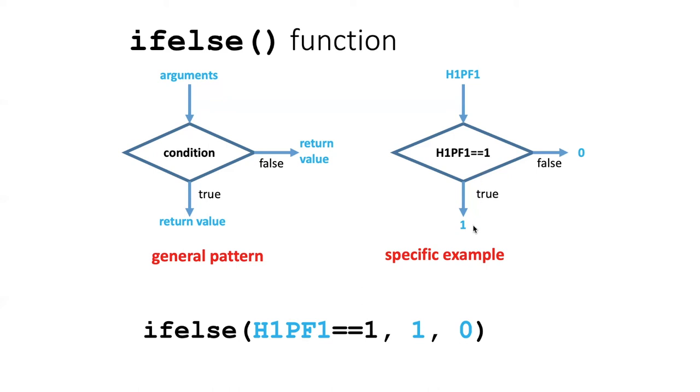So in this case, if the value is one, we don't really do anything to it, we leave it the same. But in all other conditions, that's where the else part comes in: we assign its value equal to zero.